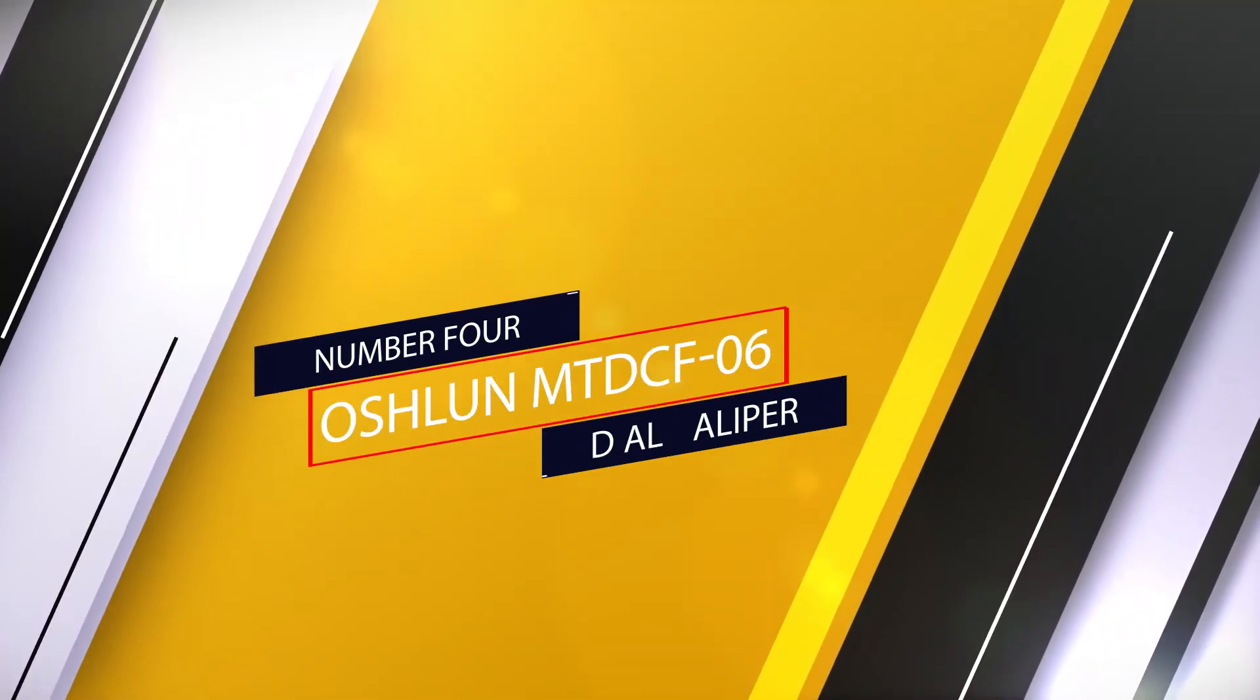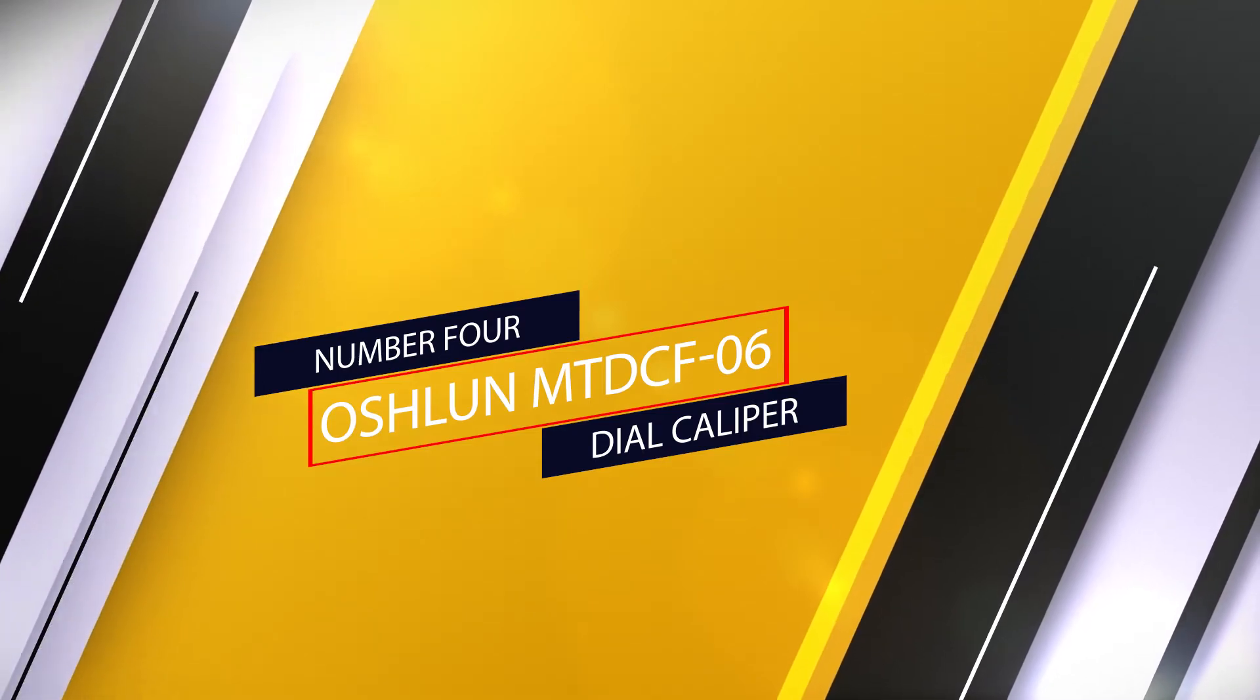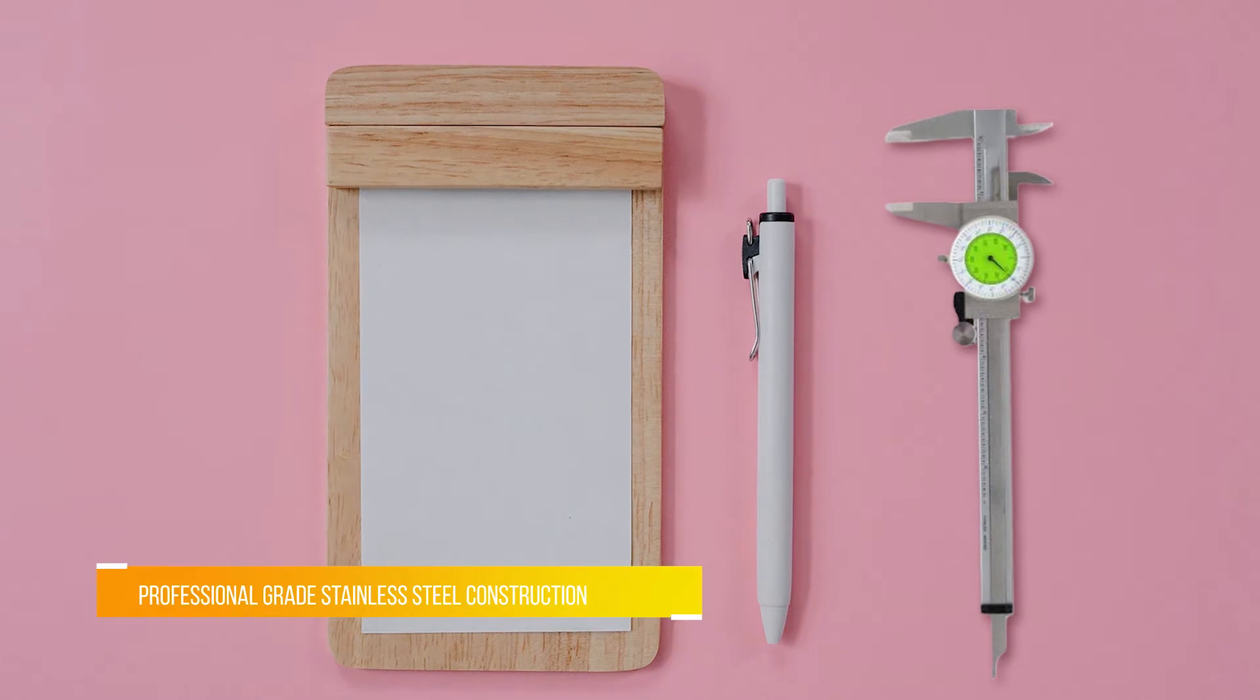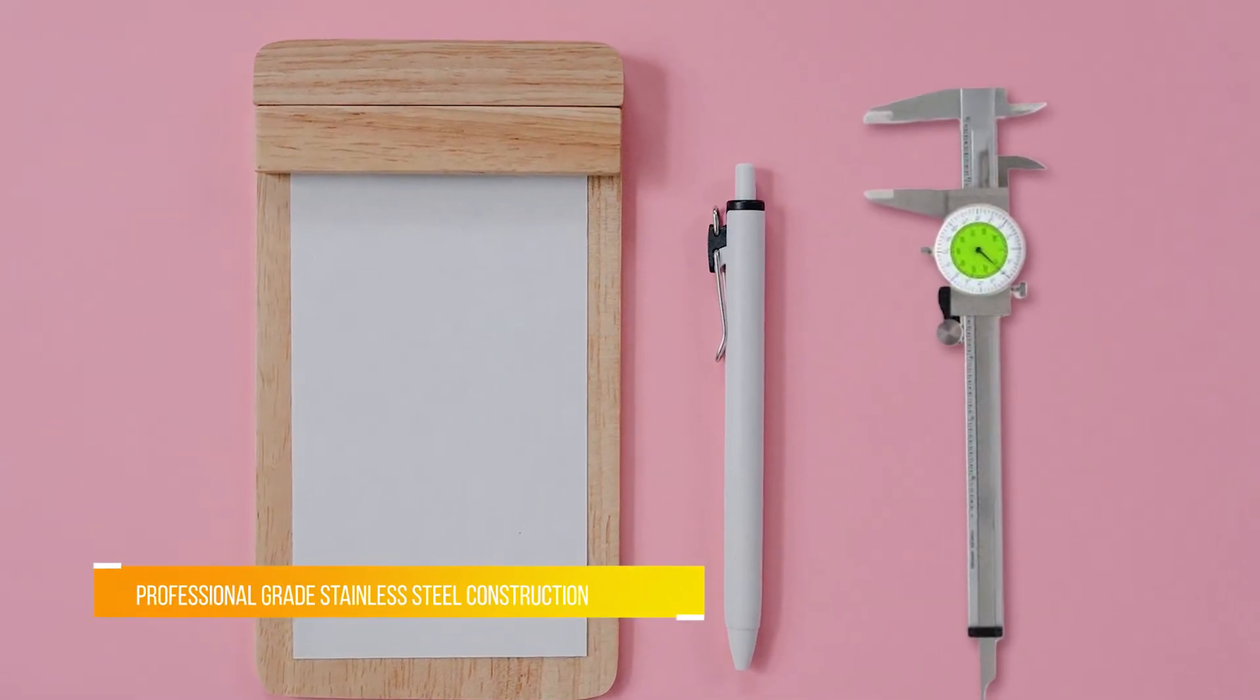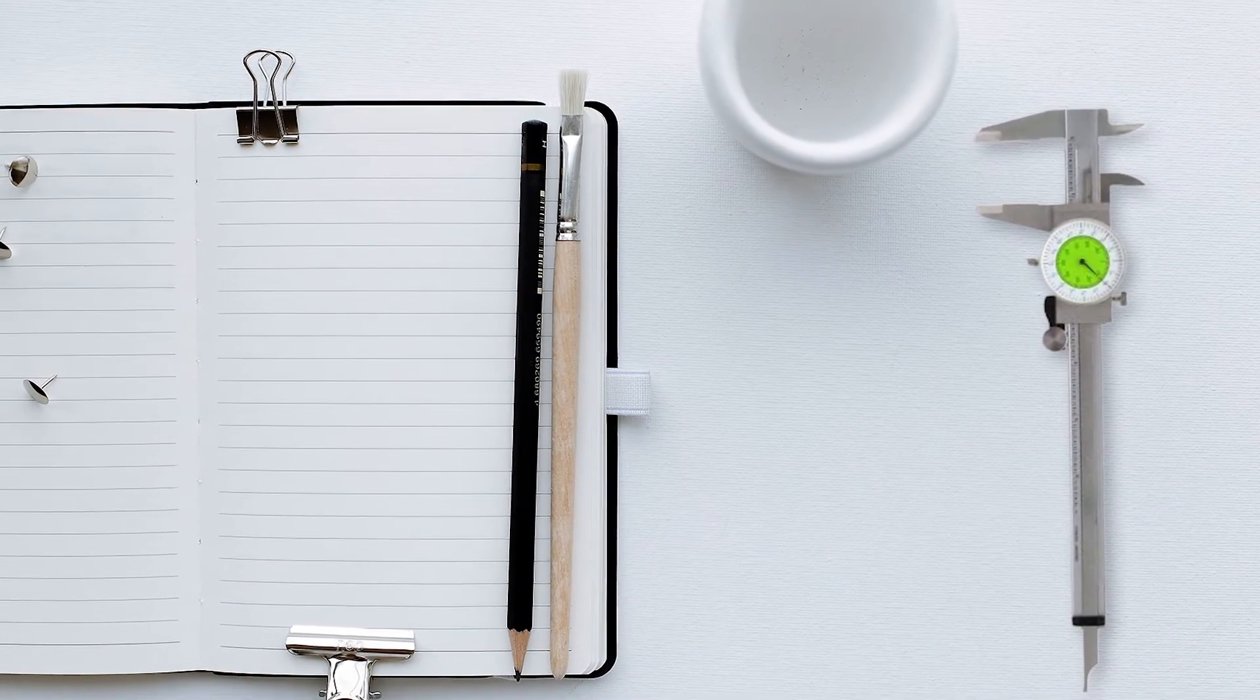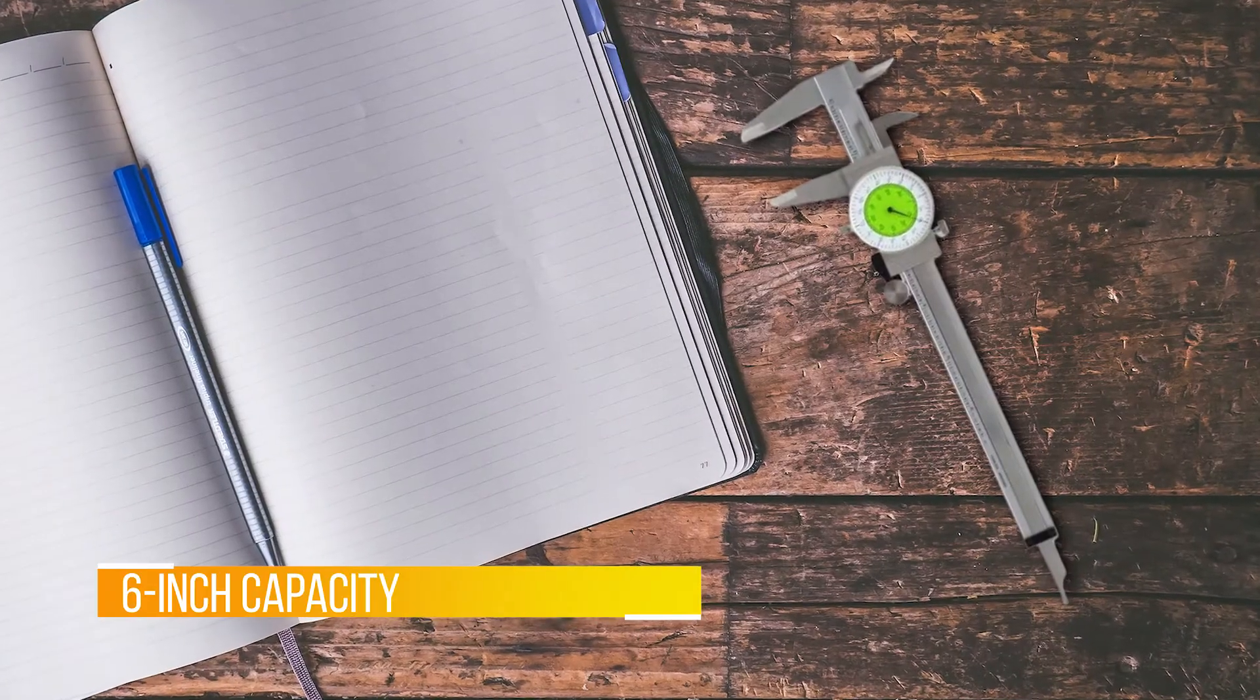Number four: Oeschlin MTDC-F06 dial caliper. Accurately gauge clearances while metal or woodworking using the Oeschlin MTDC-F06 dial caliper, around $41. Its adjustable dial allows for simple step readings thanks to graduations of both 0.01 inches and 1/64th, as well as a thumb-operated knob that makes one-handed use easy.